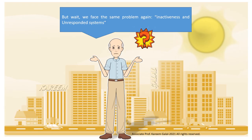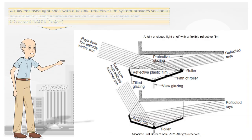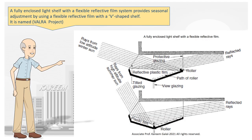We face the same problem again — inactiveness and unresponsive systems. Some light shelves have a specular top surface, some are diffusing. Partially reflecting semi-transparent materials have also been used. Various clever profiles have been developed to respond to the changing solar altitude and are adjustable to compensate for summer-winter differences in the sun's path. A fully enclosed light shelf with a flexible reflective film system provides seasonal adjustment using a V-shaped shelf. It is named the Valra Project.